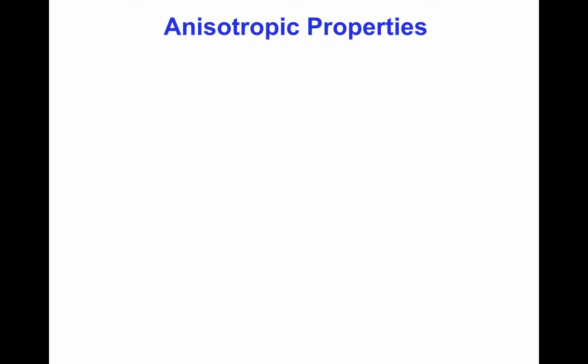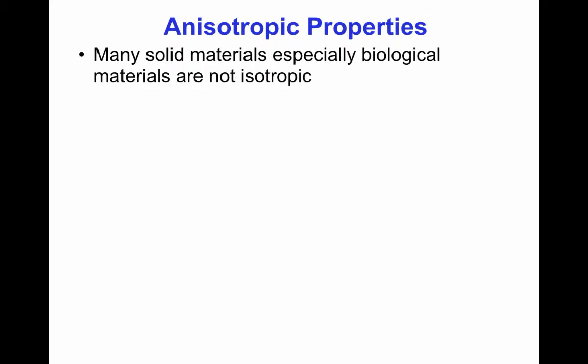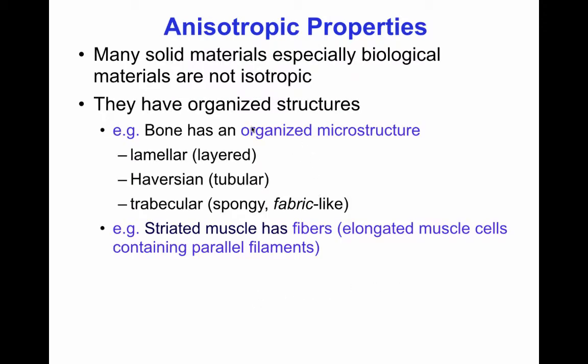Not all Hookean elastic solids are isotropic. Many materials, especially biological materials, are anisotropic because they have organized structures. For example, bone has an organized microstructure, and there are different types of bone: lamellar bone has layers, Haversian bone has a tubular microstructure, and trabecular bone has a spongy, fabric-like structure. These all affect the anisotropic or directional properties of bone.